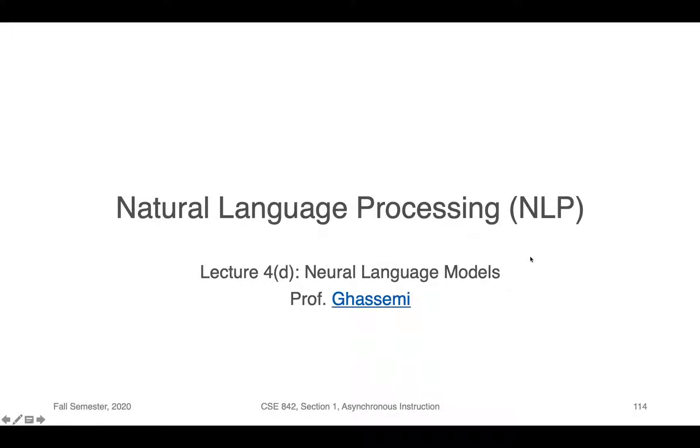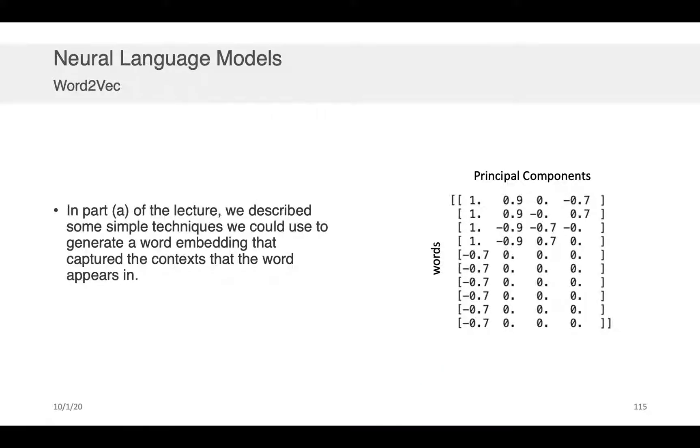Hi everybody, Professor Gassimi here. In this component of the lecture we're going to be discussing neural language models. Now remember from part A of the lecture that we described some very simple techniques that we could use to generate word embeddings as a function of the context that the word appeared in.